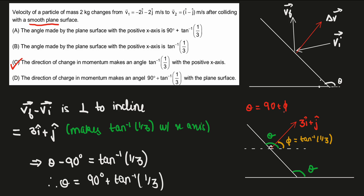Since phi is tan inverse of 1 by 3, theta comes out to be 90 plus tan inverse of 1 by 3, which is option A. So the correct answer to this question is option A and C. Hope you understood the solution. Please subscribe to my channel and share this video with others so that it can help as many aspirants as possible. Thank you.